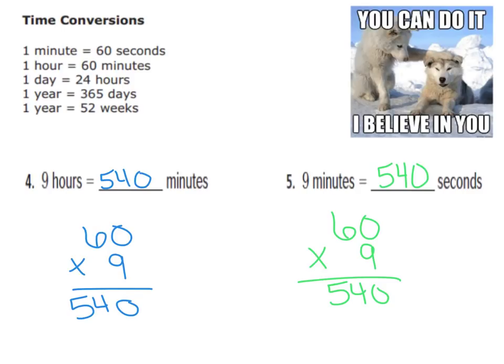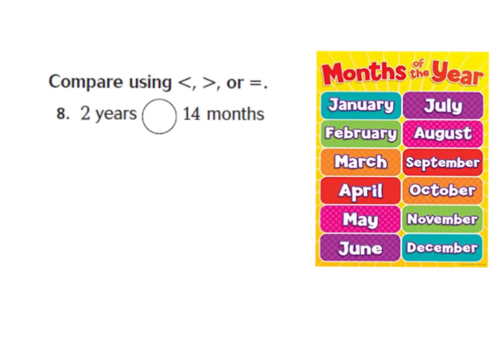How'd you do? I hope you did great — give yourselves a happy face! Let's go ahead and jump down to number eight. Number eight wants us to compare using less than, greater than, or equal to. We have two years and 14 months.